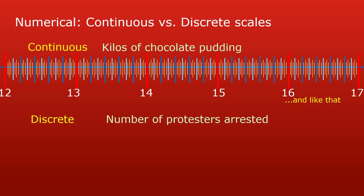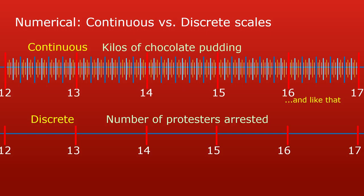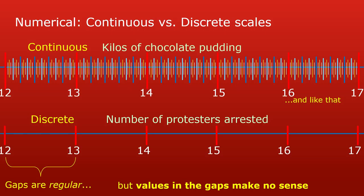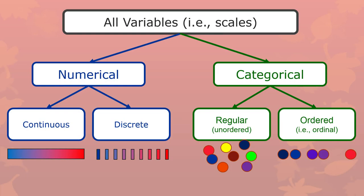A discrete scale — for instance, I'm just counting because that's the easiest way to have a discrete scale — like the number of protesters arrested at last week's protest. You can have these numbers, but dividing them up doesn't make sense because it doesn't make sense to divide people. It's still a numerical scale because the gaps are regular: the distance between 12 and 13 protesters is exactly one protester, same as between 15 and 16. All the gaps are the same size — mathematically regular. However, the values between the numbers in the gaps don't actually make any sense. What's in between 13 and 14 protesters? Nothing.